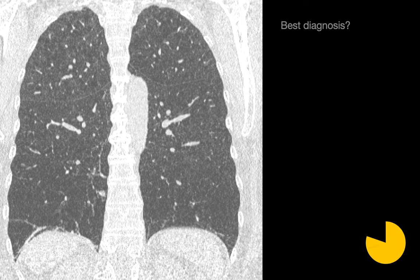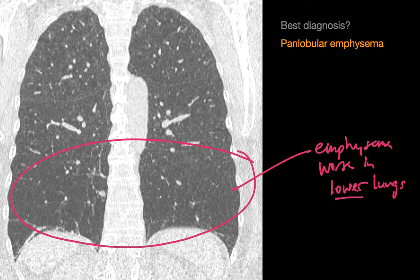What is your best diagnosis in this case? In this case, the alveolar disease is one of decreased lung attenuation rather than increased. We see regions of decreased attenuation due to emphysema most pronounced in both lower lungs, making the best diagnosis panlobular emphysema, which we may also refer to as panacinar emphysema.